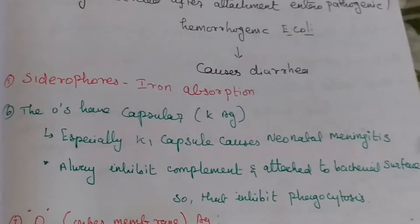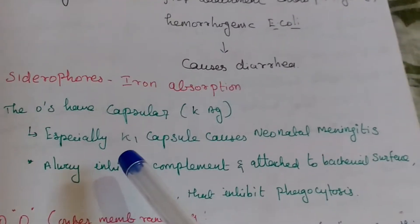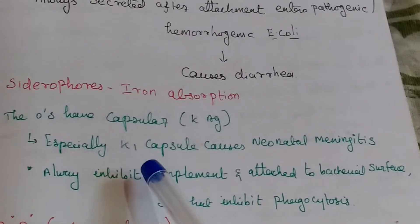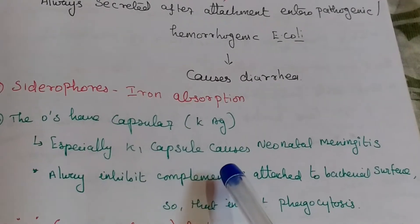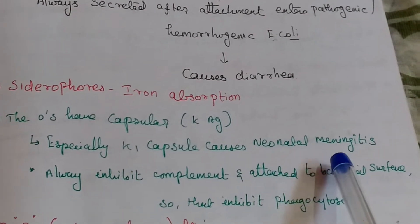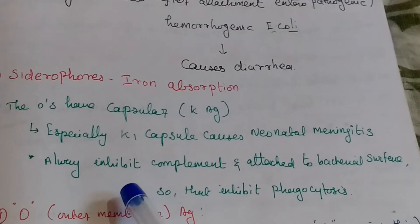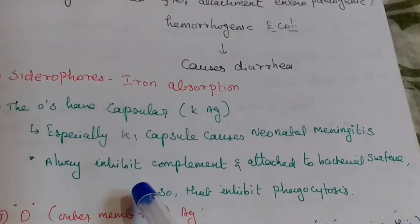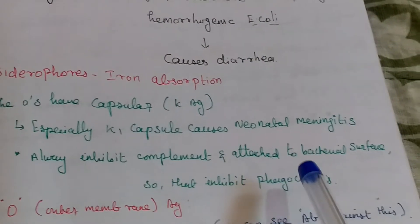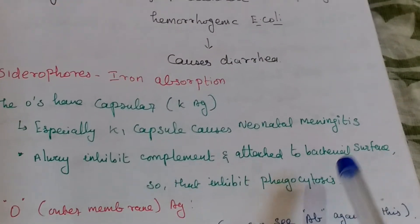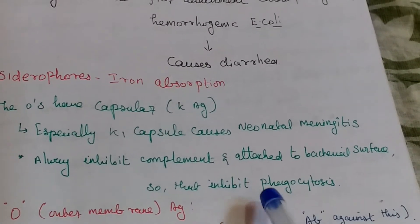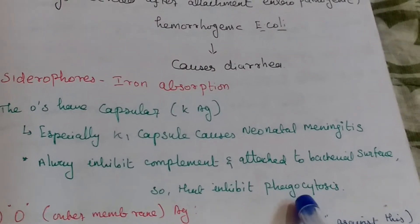Regarding antigens as virulence factors: the K antigen is the capsular antigen. Specifically, the K1 capsule is associated with neonatal meningitis. It inhibits complement and attaches to the bacterial surface, thereby inhibiting phagocytosis.